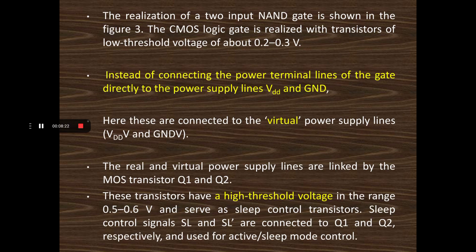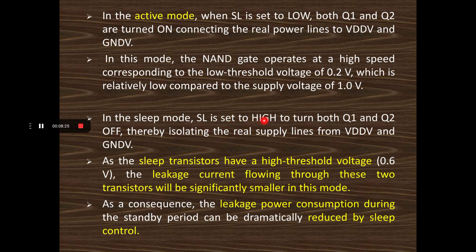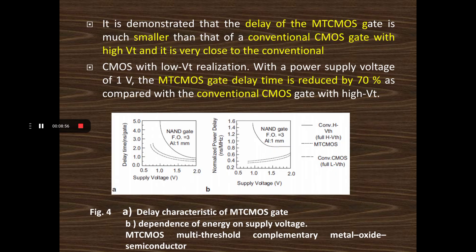In sleep mode, SL is set to high, turning off both Q1 and Q2, thereby isolating the real supply lines from the virtual VDD and ground. Since the sleep transistors have a high threshold voltage of around 0.6 volts, the leakage current through these transistors is significantly smaller. As a consequence, leakage power dissipation during standby mode is dramatically reduced by this sleep control mechanism.